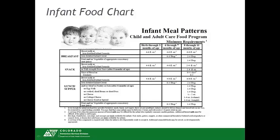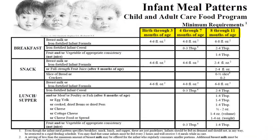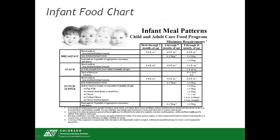The meal requirements are significantly different for each age group. The age groups are 0 to 3 months, 4 through 7 months, and 8 through 11 months. Throughout the infant section, we will refer to iron-fortified infant formula as formula and iron-fortified infant cereal as infant cereal. The infant meal patterns are flexible and allow sites to offer foods to infants only when they are developmentally ready to accept them.